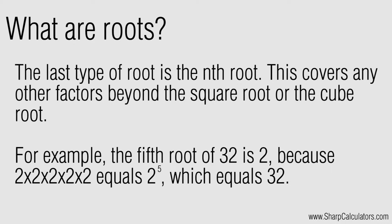The last type of root is the nth root. This covers any roots beyond the square root or the cube root. For example, the fifth root of 32 is 2, because 2 multiplied by itself 5 times equals 32.